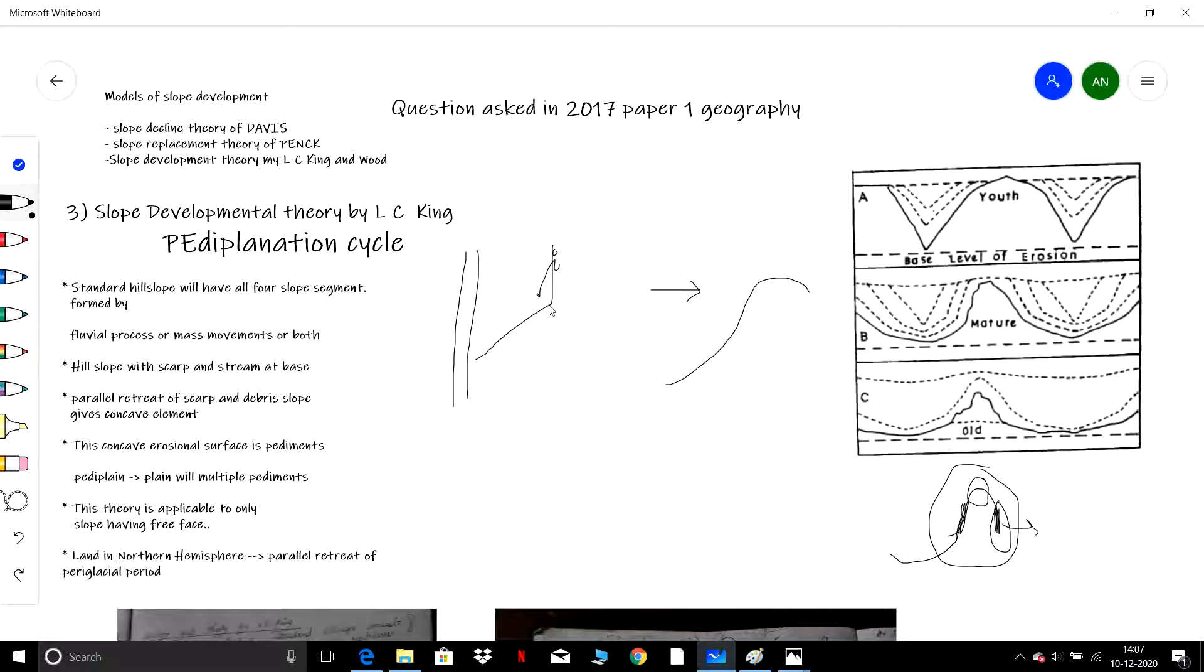This weathered rock will undergo parallel retreat—the free face will undergo parallel retreat. There is a stream at the bottom of the lower segment of this debris slope which will carry the debris. So there is a constant supply of debris from the top and there will be outflow here, so the debris length will be maintained.